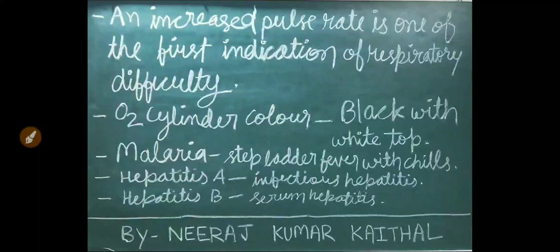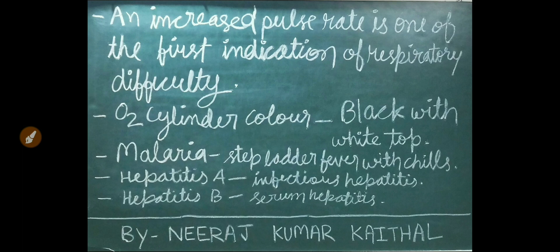An increased pulse rate is one of the first indications of respiratory difficulty. Oxygen cylinder color is black with white top. In malaria disease, stepladder fever and chills are present. Hepatitis A is called infectious hepatitis. Hepatitis B is also known as serum hepatitis.